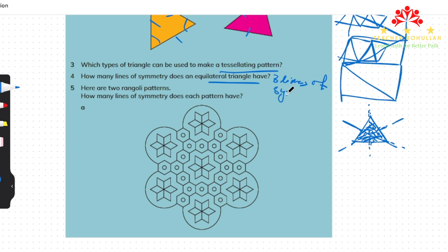In question five we have two parts - part A and part B. Question five shows two rangoli patterns and asks how many lines of symmetry each has. In part A, if we draw a line crossing from the center of the rangoli, this can be a line of symmetry because both sides of the line are the same - the shapes on both sides are the same shapes in the same sizes.